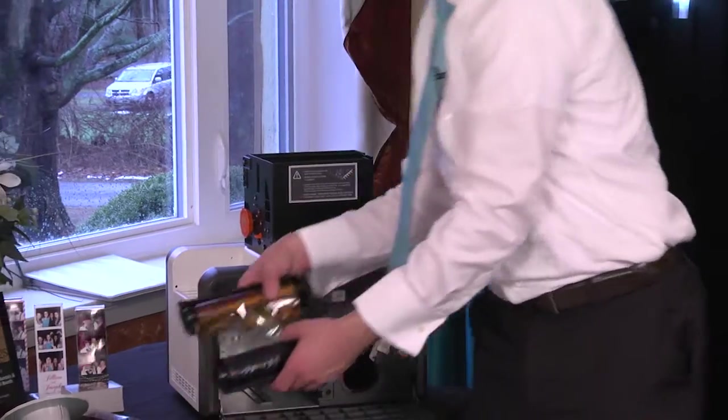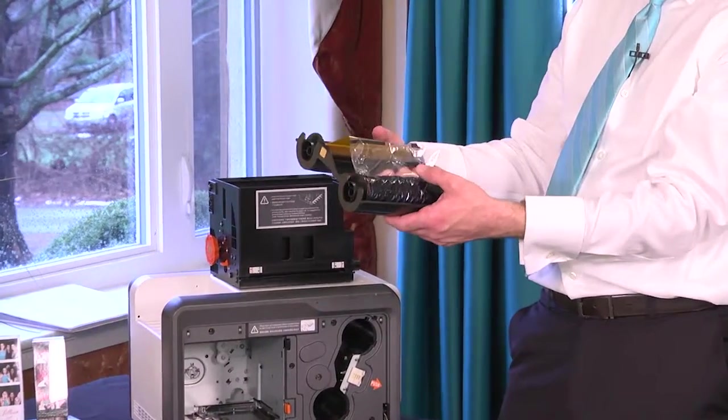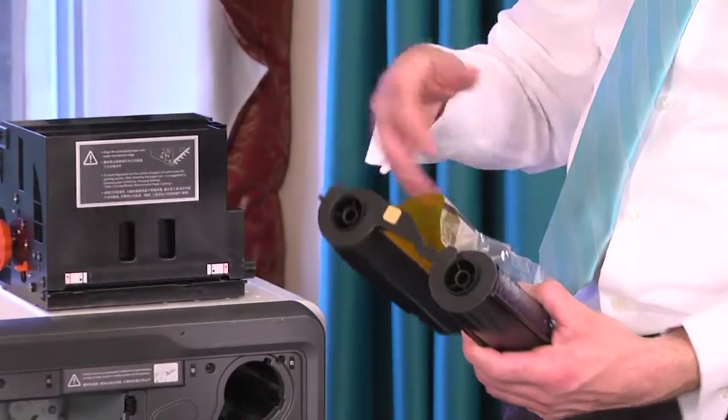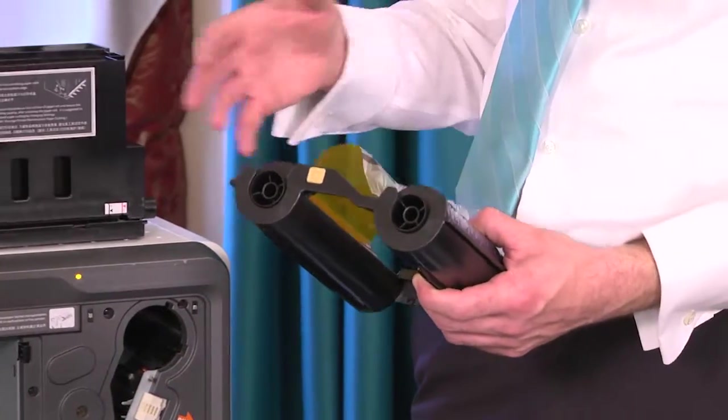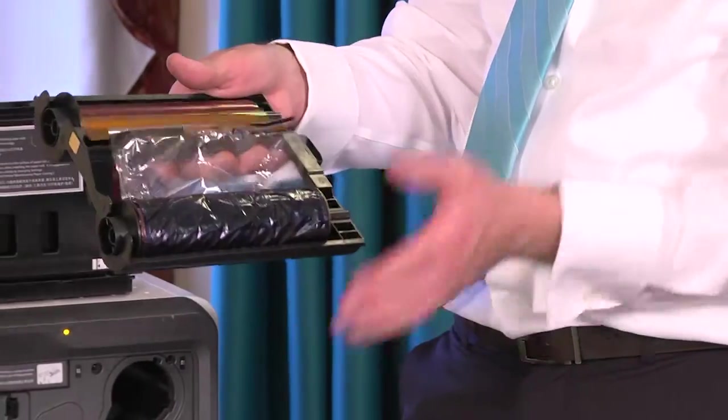Another issue you could run into is a ripped ribbon like this. Now, if it's almost gone like this one is, you can toss it, put a brand new one in. But if it's early in the night or halfway through and you didn't use much of it, you can fix it.